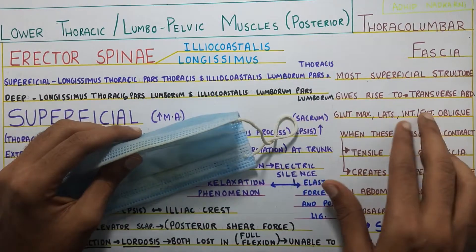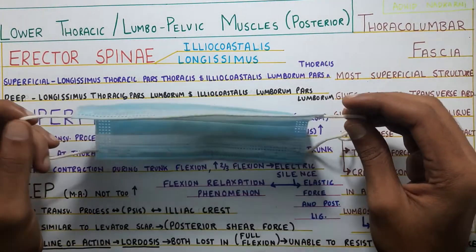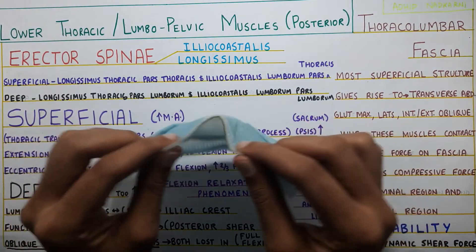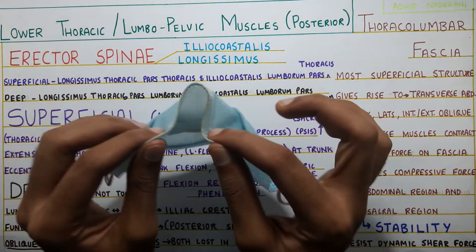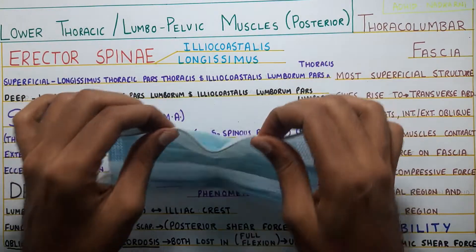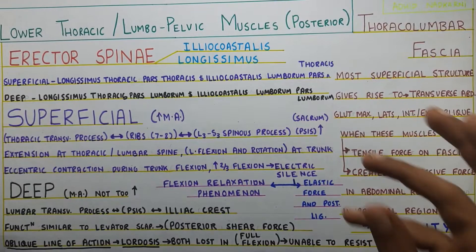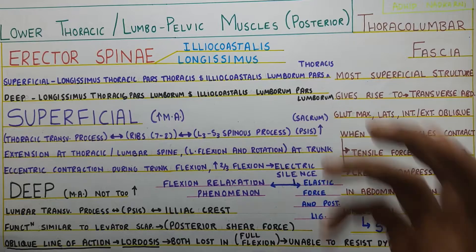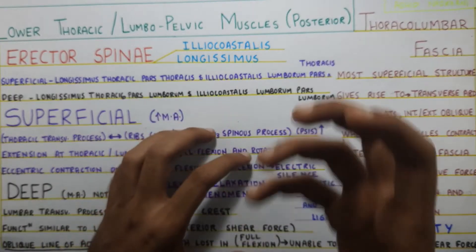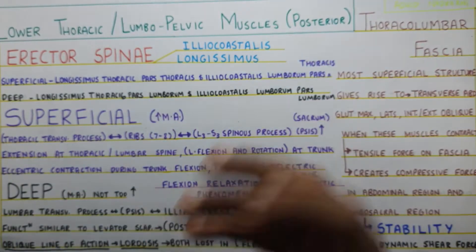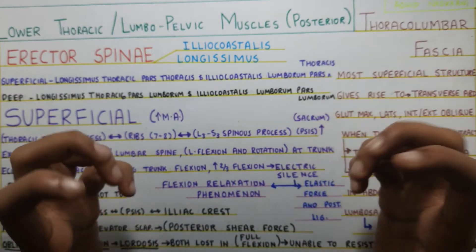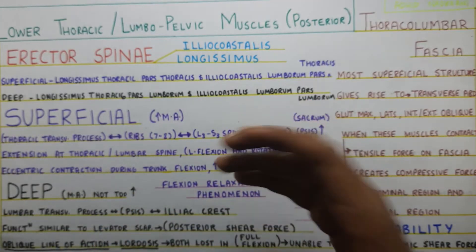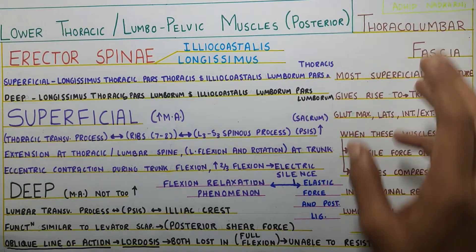Your lats, internal and external oblique, and transverse abdominis — when these muscles contract, they create a tension in the fascia. This tension is a tensile force that is pulling away, and that tensile force creates a compressive force in your abdominal and lumbosacral region, which provides stability to the whole trunk when you are doing movements. All the compound movements will cause these muscles to contract, giving your trunk stability. That is the function of the thoracolumbar fascia.